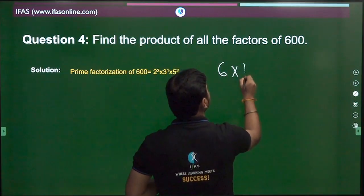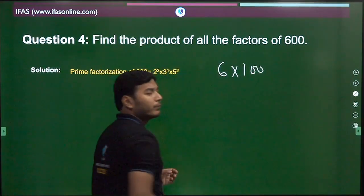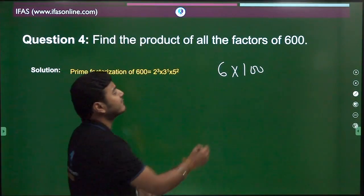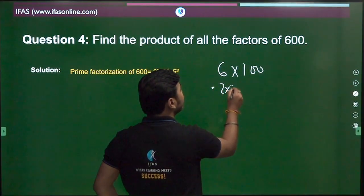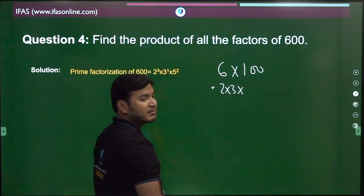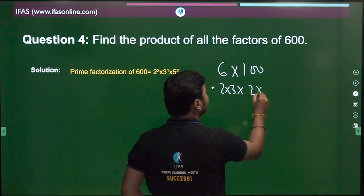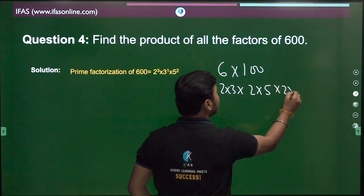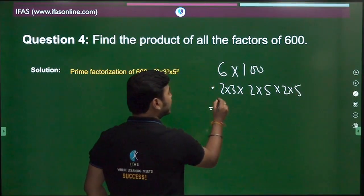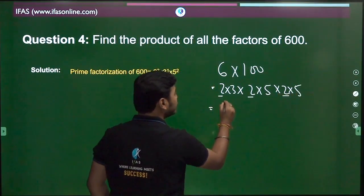100 you can write as 10 into 10, which is easy to prime factorize. This gives us 2 multiplied by 3, and 100 means 10 into 10, which is 2 multiplied by 5 and 2 multiplied by 5. If you count, how many 2's are there? Three 2's, so 2 cube.